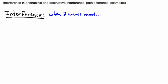We're going to be talking about interference, which is what happens when two waves meet. Two waves, or even more, can actually meet up and interact with each other. We're going to learn the words interference and also superposition of waves — they're actually sort of two sides of a different situation here.